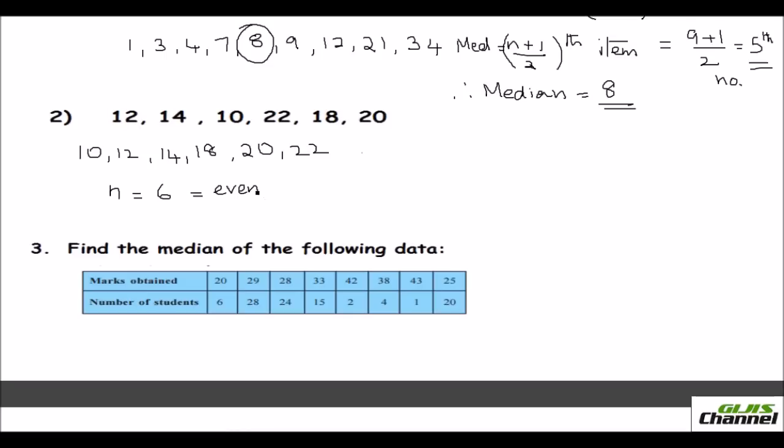When it is even, what you need to do is you have to find out the average. You find out what is n by 2. So that is 6 by 2 is third number. So that's third number. Also find out n by 2 plus 1 number. So that will be fourth number. You have to take the next number. That is, you got whatever you got by doing n by 2, the next number. Fourth number. And its average. The average of these two numbers will be your median.